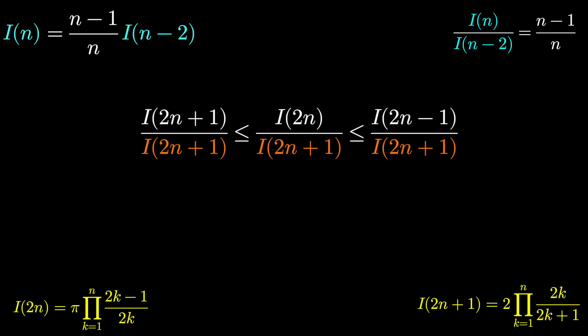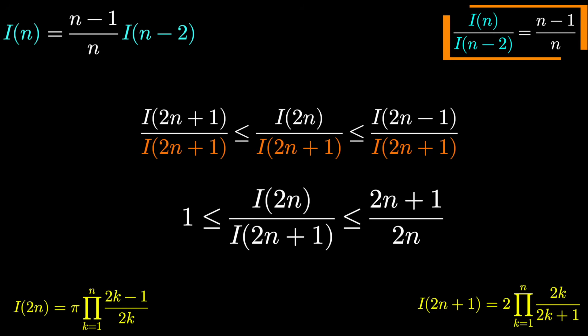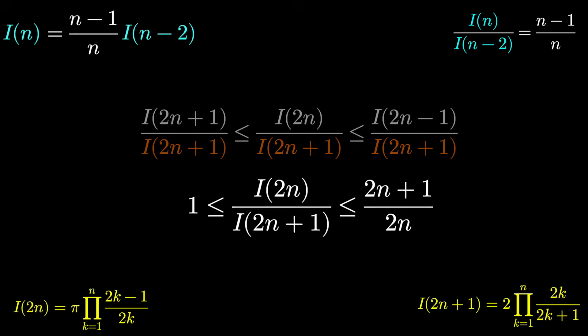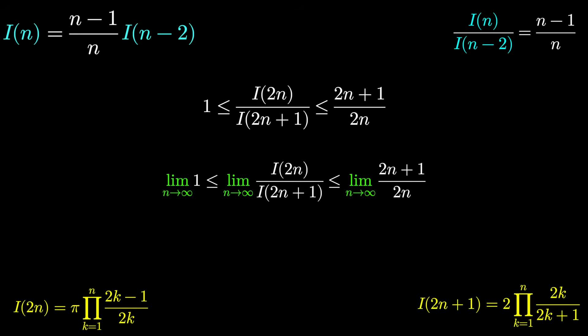On the very left, we would just get 1. That's I(2n+1) over itself. I'll leave the middle alone. And on the right, we can just use the recursive relationship. Since I(n) over I(n-2) is (n-1)/n, that was one of the first things we calculated. This will just be (2n+1)/(2n). And we can find out what happens as n grows infinitely large by using the squeeze theorem.